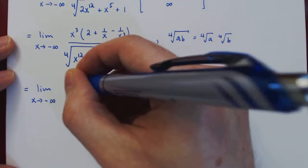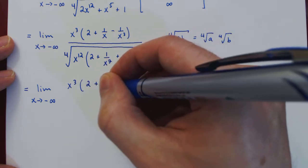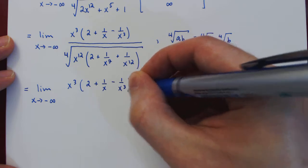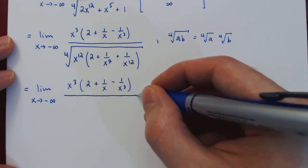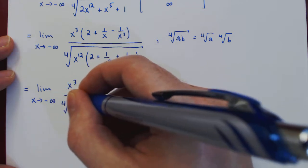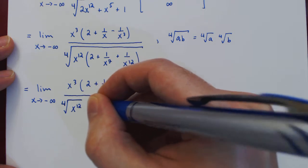The numerator remains the same, over now the fourth root of x¹² times the fourth root of the second term.